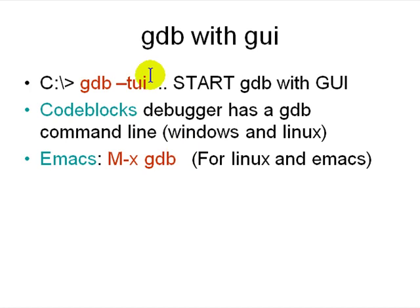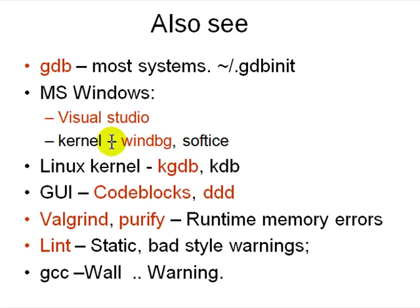If you need a GUI, you can run gdb -tui for a built-in terminal UI. For debugging large amounts of code, Code Blocks is a free IDE with GDB built in and a command line. You can also use Emacs with M-x gdb, which splits the window into source code and a GDB command line. For frequent commands, put aliases and helper functions in your .gdbinit file — you can look online for details.